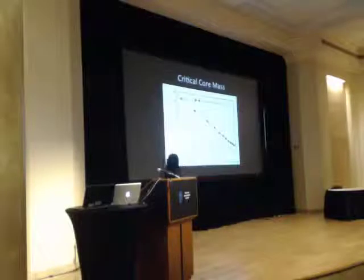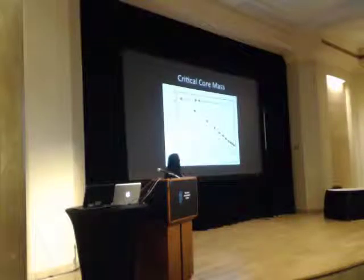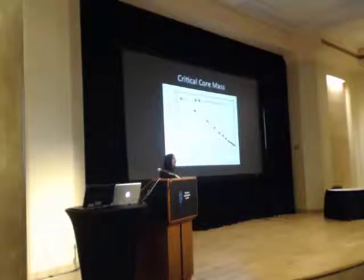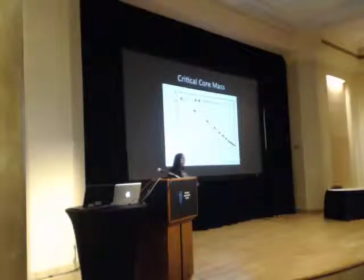Here I show the critical core mass as a function of semi-major axis for the case of an ideal diatomic gas. We already see that even in the more inner parts of the disk, this value is smaller than the standard ten Earth mass value. In a couple of minutes I will compare these results with standard planetesimal accretion results, but first I'd like to discuss some of the factors that affect this critical core mass.